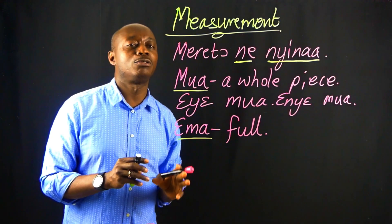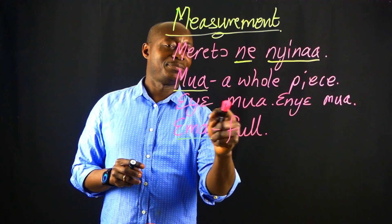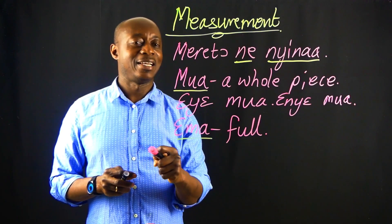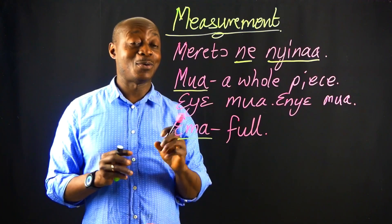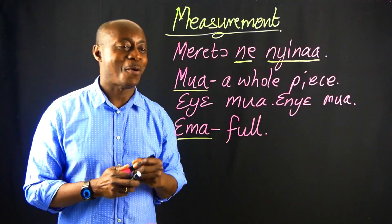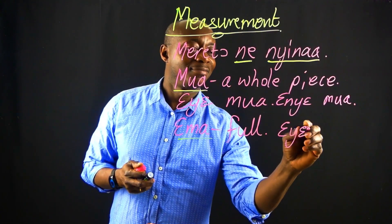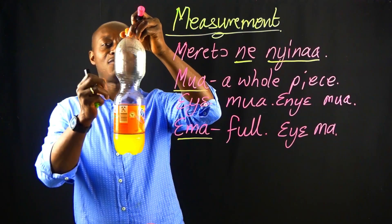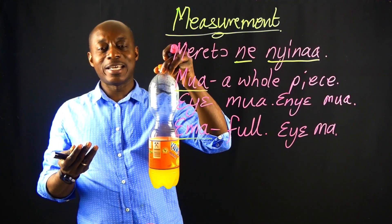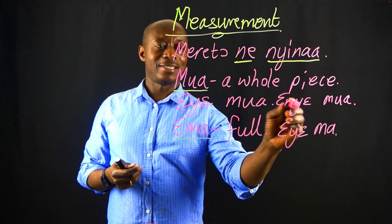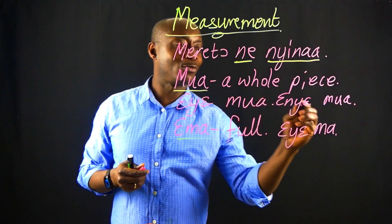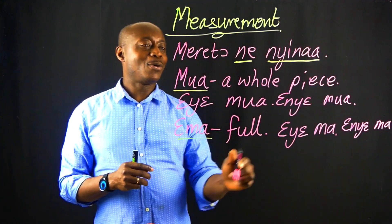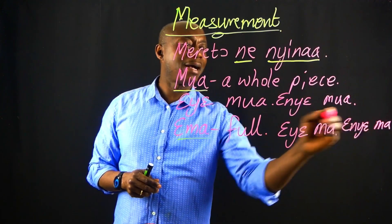If you want to say 'it is full,' you say EYE MUA. If you want to say 'it is not full,' you say EYE MUA. So EYE MUA means 'it is full,' and EYE MUA means 'it is not full.'